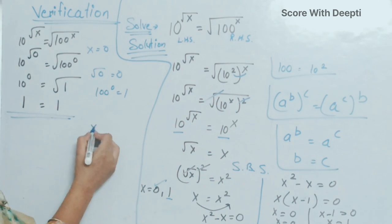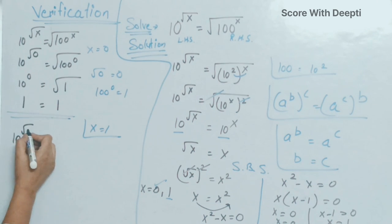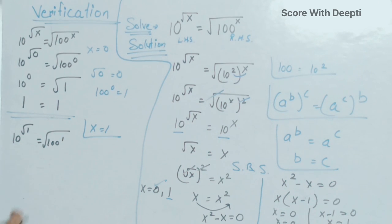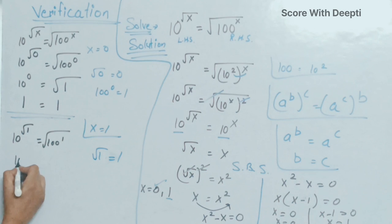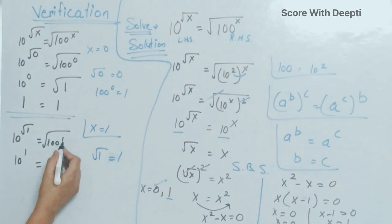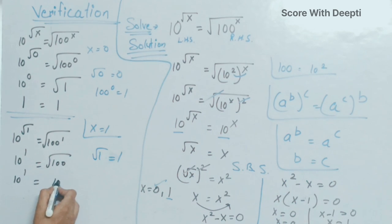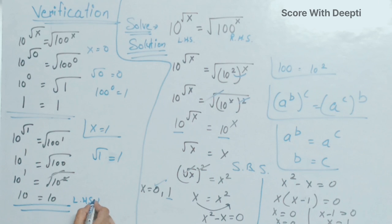Now we check x equal to 1. We take x equal to 1, and in place of x we write: 10 raised to power square root 1 equal to square root of 100 raised to power 1. Square root of 1 is equal to 1, so we get 10 raised to power 1 equal to square root of 100 raised to power 1. Since 100 can be written as 10 squared, the square cancels with the square root and we get 10 equal to 10. Left hand side equals right hand side, so our answer is correct.